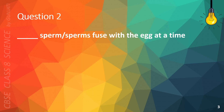Question 2. How many sperm fuse with the egg at a time? A. 1, B. 2, C. 3, or D. 4. The correct answer is A. 1.